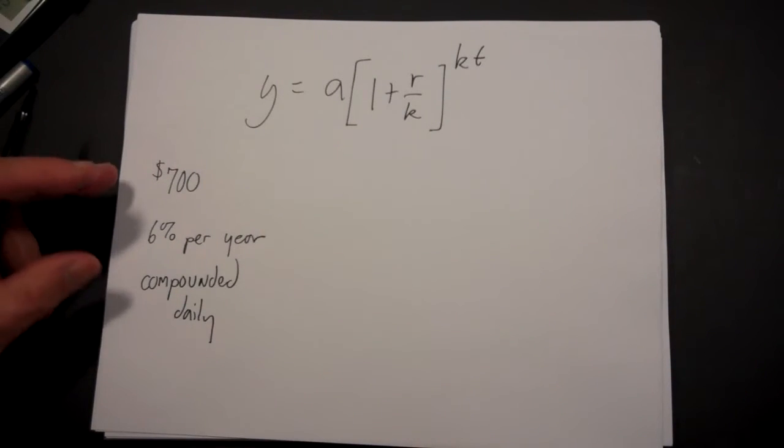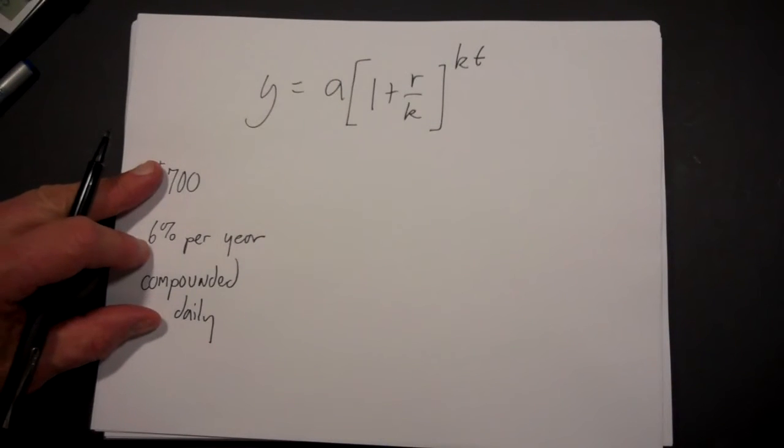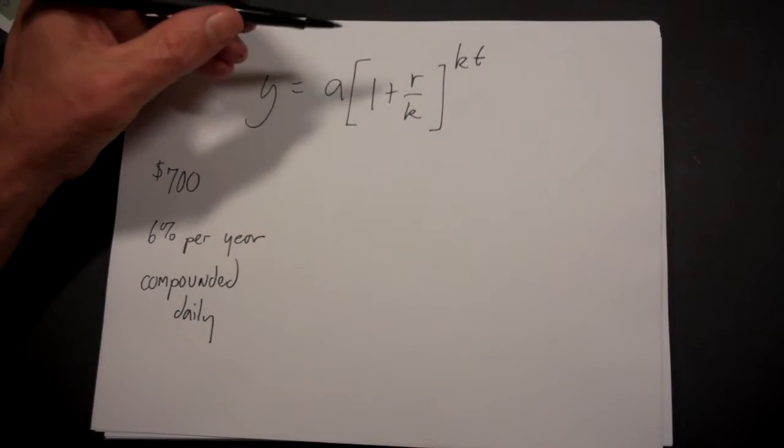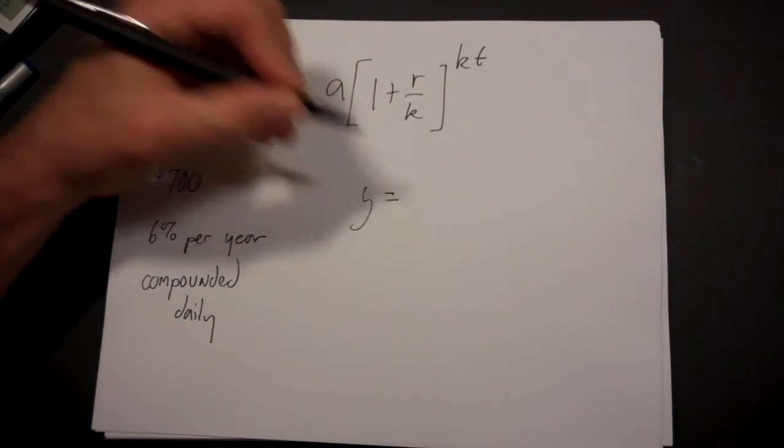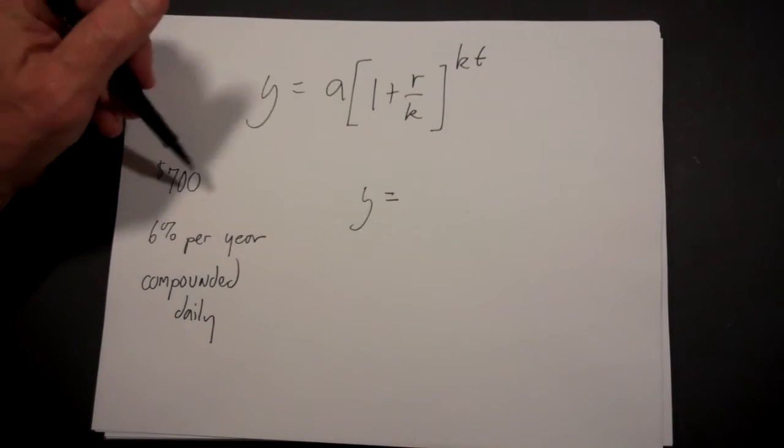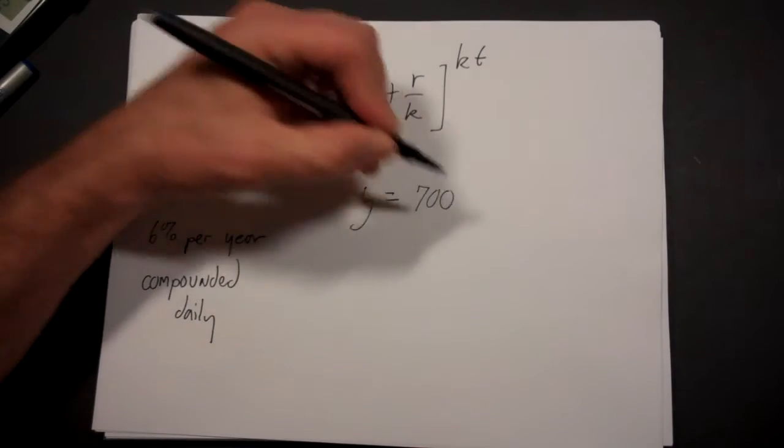Let's first write the formula in general without knowing how long we put the money in. Y is what we end up with, and a is what we start with, so we start with $700. That's pretty straightforward.